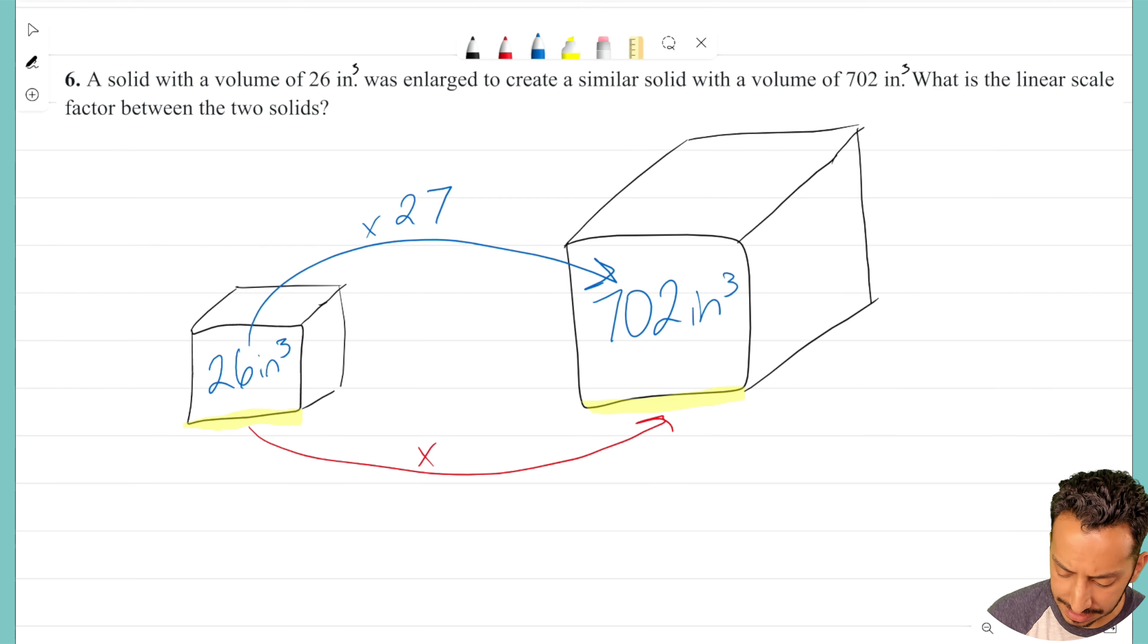So really what that means is that our volume scale factor, I'm going to write this out for you. The volume scale factor is 27. That is the volume scale factor. That is what the volumes were multiplied by.